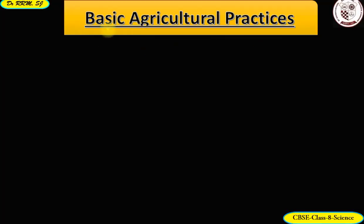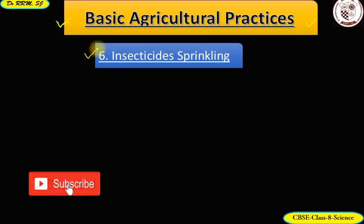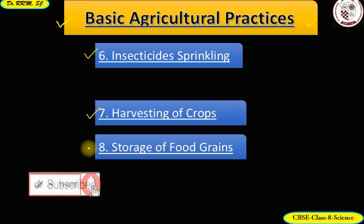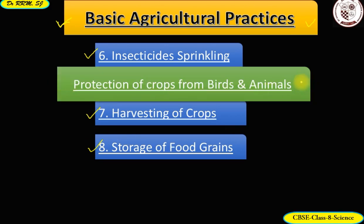Welcome back. In this video we shall study about the remaining practices of crop production, namely insecticide sprinkling, harvesting of crops, and storage of food grains. We'll also study about the protection of crops from wild birds and stray animals as part of our extra knowledge. We begin with sprinkling of insecticides.